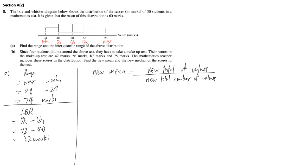To get the new mean, we need to find the new total values and the new total number of values. In a box-and-whisker diagram alone, they don't give us each data point individually, so it's impossible to find the mean from the diagram alone. However, this question tells us the original mean is 60 marks and there are originally 30 students, which helps us get the original total.